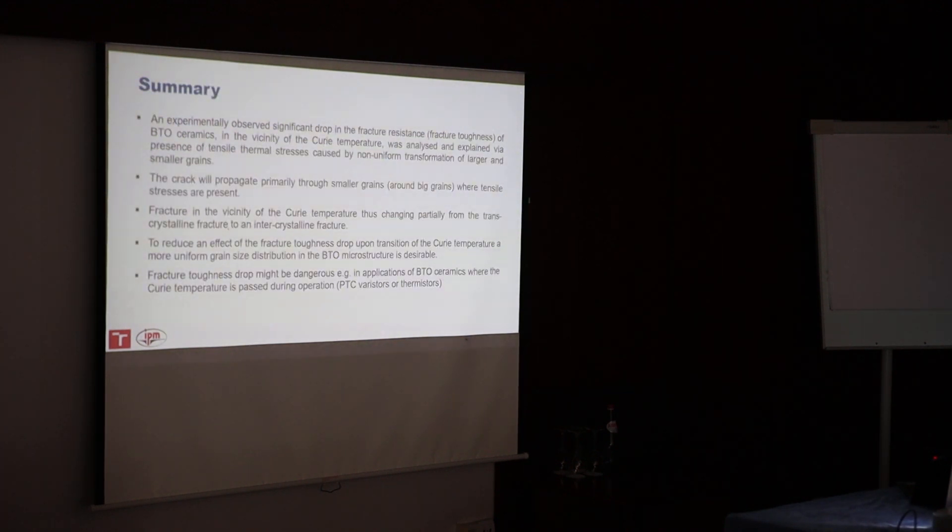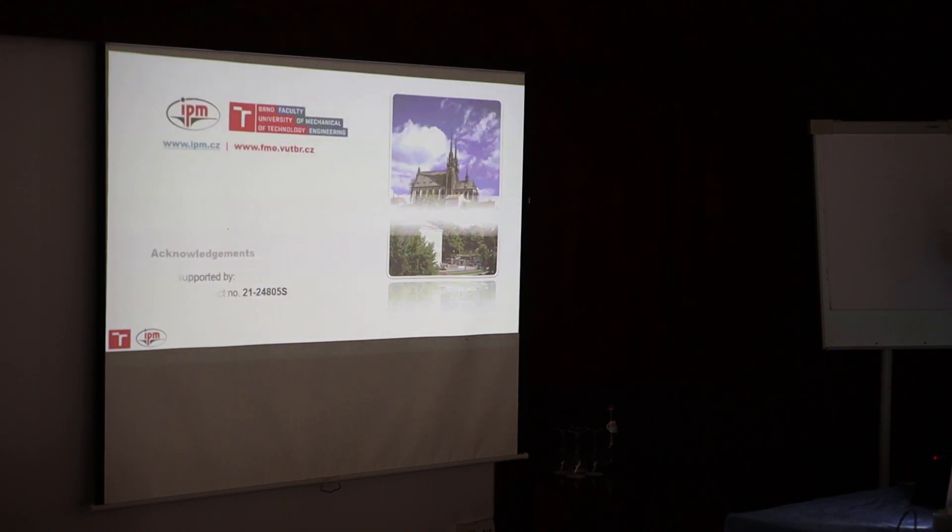Finally we were trying to explain the drop of the fracture toughness in case of barium titanate material when we are passing the Curie temperature. This is important for the materials which pass this temperature during operation. The conclusion of what we can do to avoid this effect: we have to try to prepare barium titanate microstructure which is composed of uniform grains having uniform size in the whole microstructure, so that we avoid these mismatches between these two grains. Thank you for your attention.